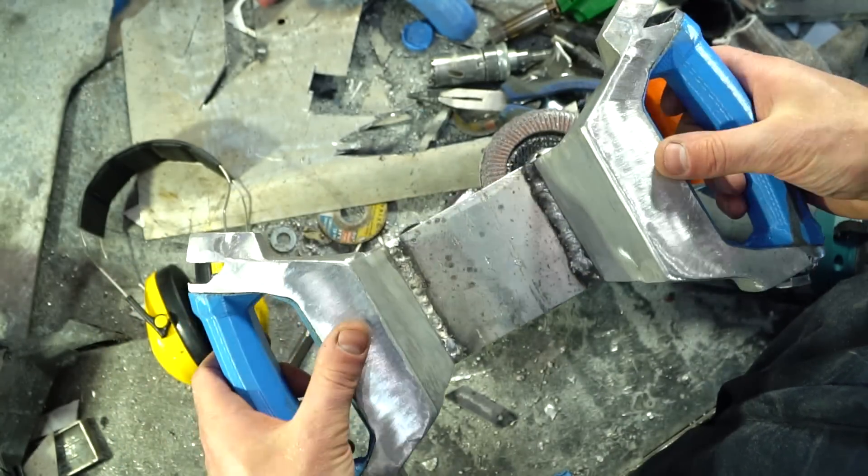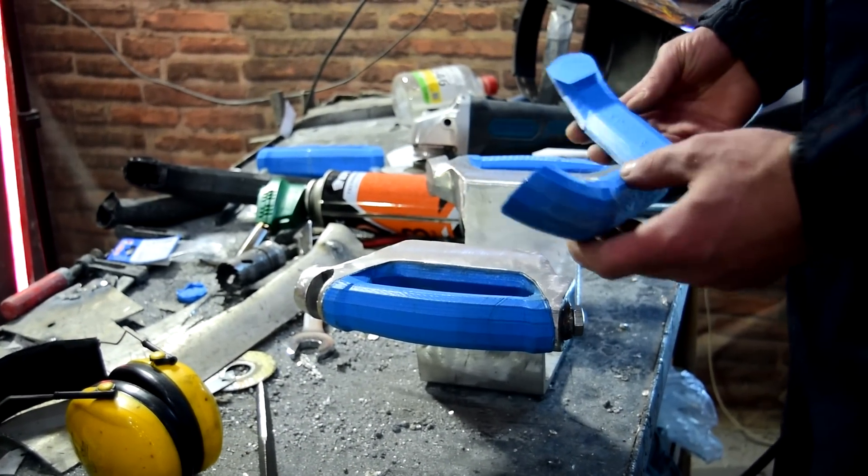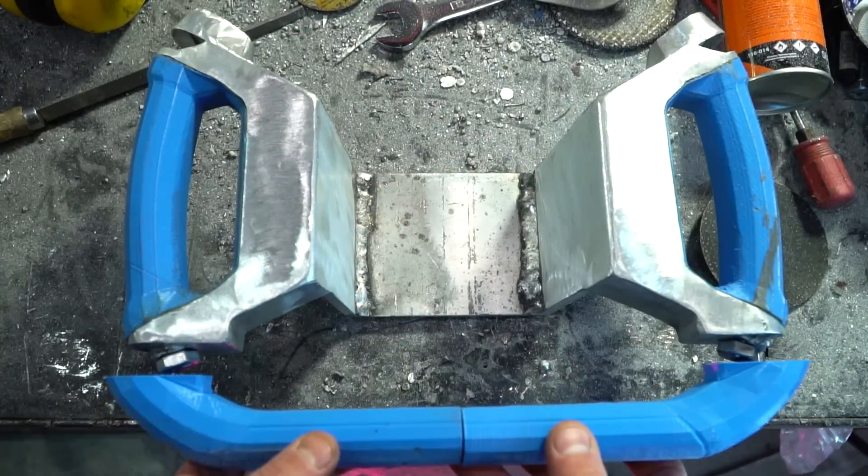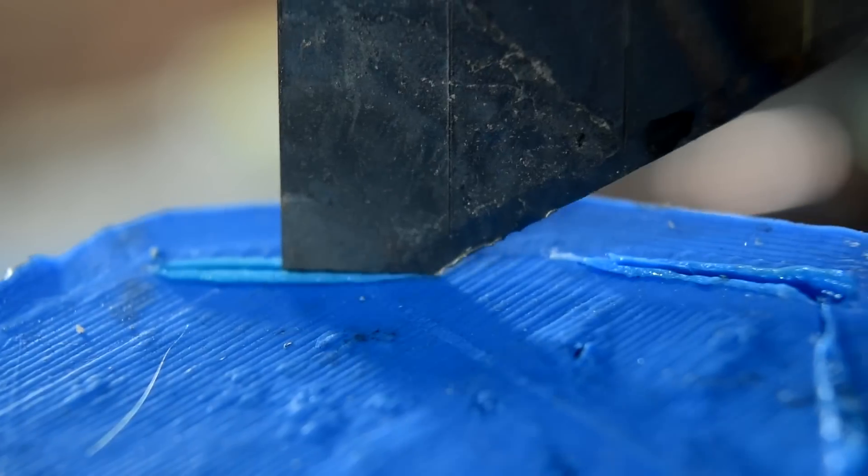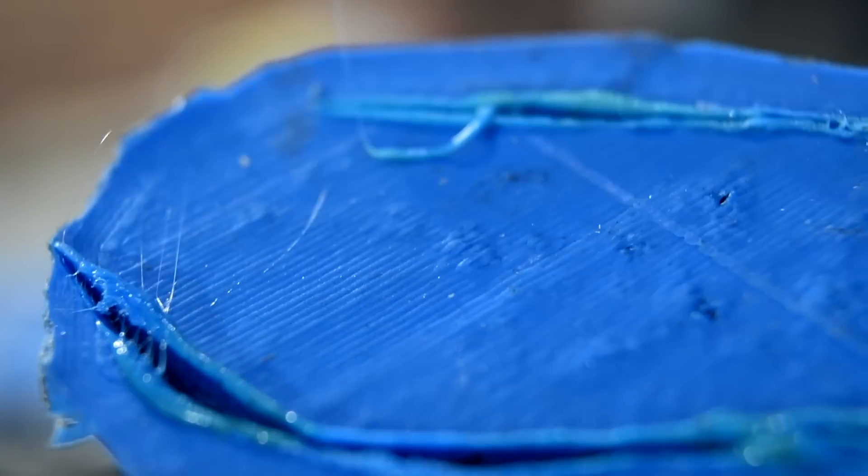Next goes the bottom of the steering wheel. Since my 3D printer doesn't allow me to make such long details, I printed a two-part bar with a reserve for fitting. I also removed the ends from the details and glued them together.